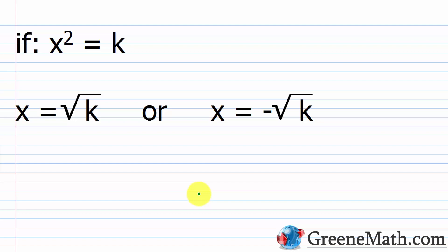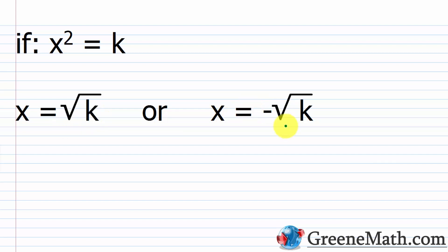We're going to start out today by talking about the square root property. Essentially, if we have a variable like x and it's being squared, and it's set equal to some number k, then we can solve this equation for x and say that x is equal to the square root of k, or x is equal to the negative square root of k. It's very important to understand why we have these two square roots — the principal and the negative.